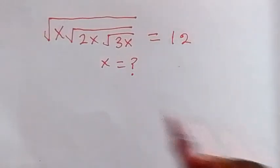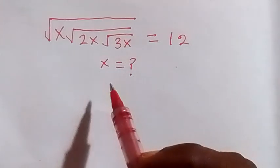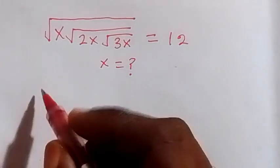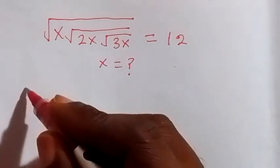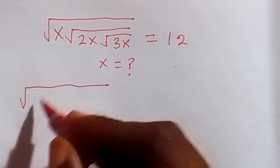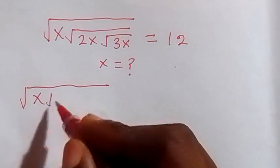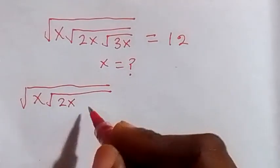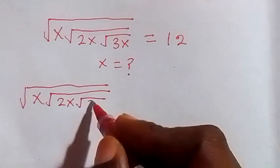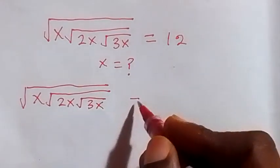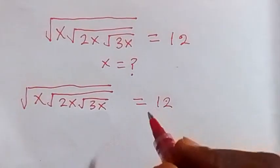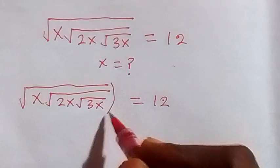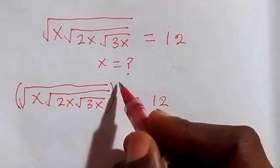Hello, you are welcome. We need to solve this problem and find the value of x. Here we have the square root of x, then inside that the square root of 2x, then inside that again the square root of 3x, equals 12. Let's take the square on both sides so as to remove one of the square roots.